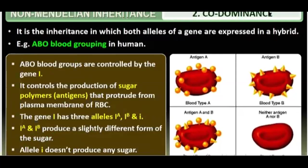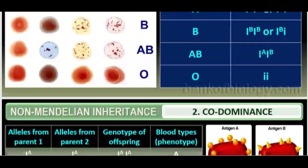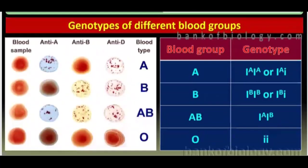Blood group A — genotype is IA IA or IA small i. IA and IB are both dominant. IA with IA is blood group A. IA and IB together — that is co-dominant. In the blood group, because this is the recessive most case, O blood group individuals can't express themselves as strongly.